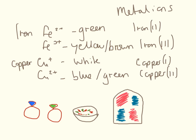One of the properties of these different states is that the different ions are different colours. Iron 2 is generally green, iron 3 is generally a yellow-brown colour. Copper 1 is generally white or slightly pinky, but copper 2 is the one we see very often, which is the nice blue-green colour.